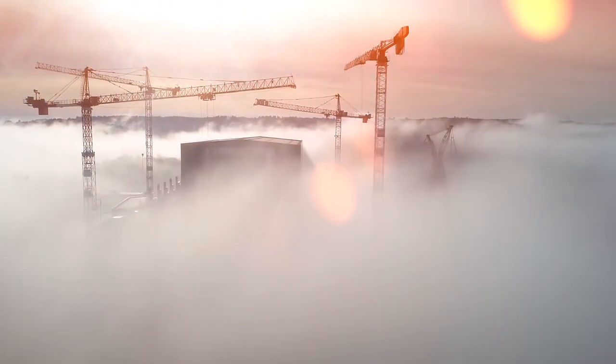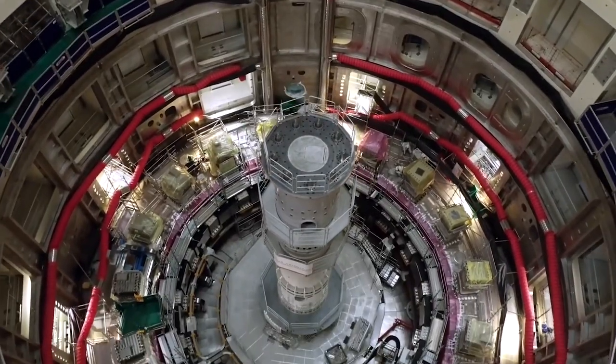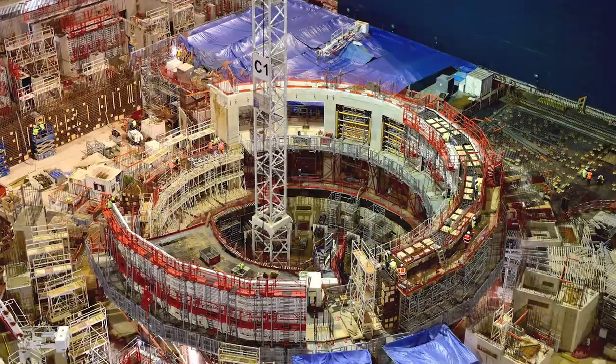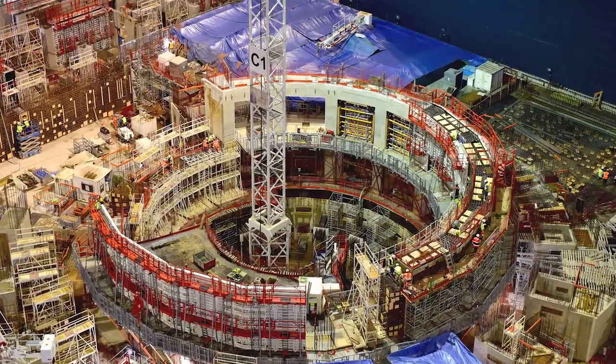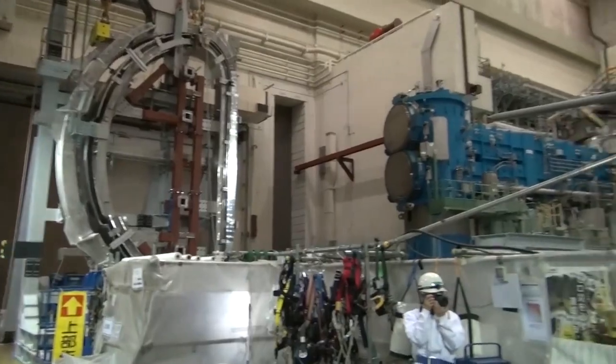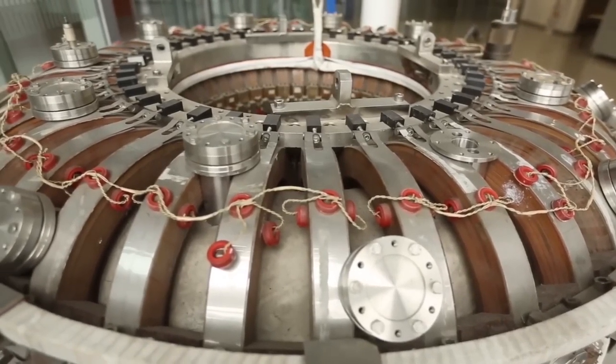In the ITER scientific installation in Saint-Paul-les-Durans, France, is the gigantic 23,000-ton, 830-cubic-meter tokamak. This nuclear fusion reactor would be eight times larger than the current largest operating tokamak. Europe's JET and Japan's JT-60 both only measure 100 cubic meters each.